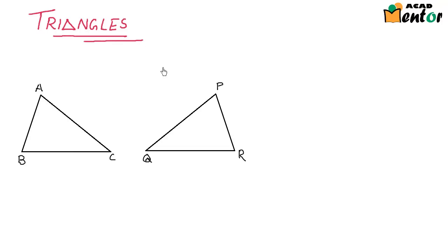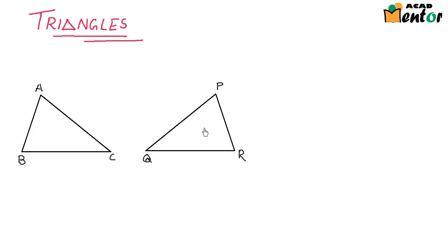Hi, we were talking about congruency of triangles, and here we will see how we can exactly know whether two triangles are congruent or not. I am given two triangles — triangle ABC on our left and triangle PQR to our right. Is there any way of finding out whether these two triangles are congruent or not?